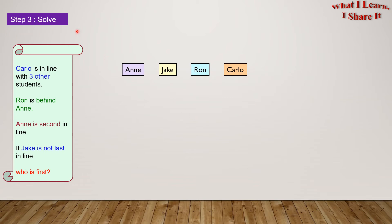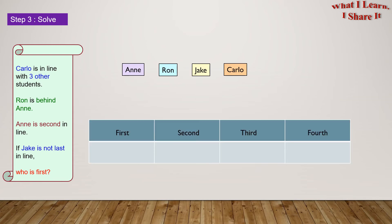Step three: solve. Anne, Jake, Ron, and Carlo are the four students. Since Ron is behind Anne, let's put Ron behind Anne over here. Now let's use this table. Here I have labeled the headers as first, second, third, and fourth. So Anne is second in line — let's put Anne in the second place.